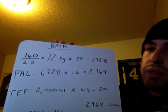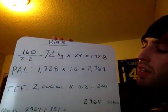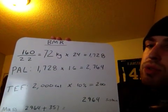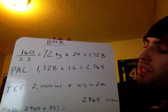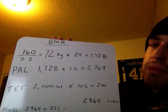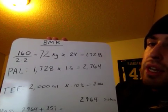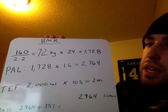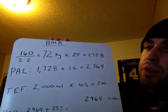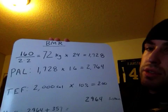Next step, thermal effective food or TEF. He said he was eating around 2,000 calories. So I took that 2,000 calories times that by 10%. That equals 200. Okay, that's how many calories you are burning during digestion. 200 calories.